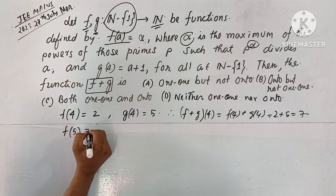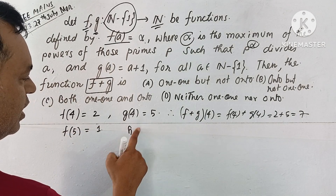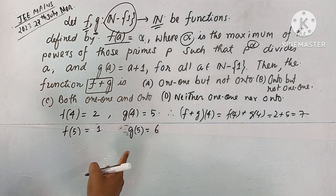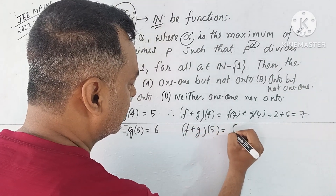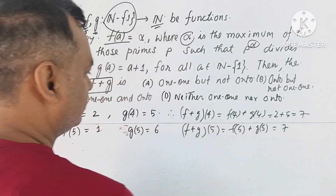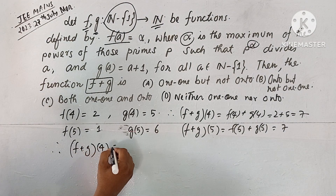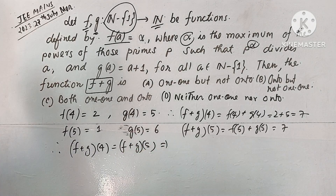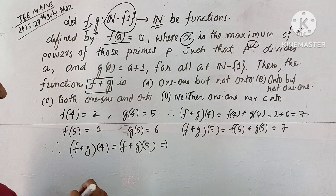F(5) equals 1. G(5) equals 6. So F+G of 5 equals F(5) plus G(5) equal to 1 plus 6, which equals 7. Therefore F+G(4) equals F+G(5), but 4 and 5 are not equal. Therefore F+G is not one-one.